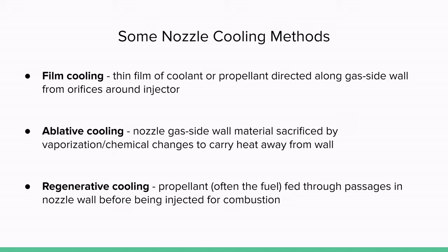In ablative cooling, gas side wall material is sacrificed by being burnt away, which carries heat away from the nozzle wall. Typically, you'll see ablative cooling used in smaller systems like hybrid rockets and with graphite nozzles specifically. In regenerative cooling, which is the most widely used in industry, the propellant is fed through passages in cooling jackets around the nozzle wall before being injected for combustion.